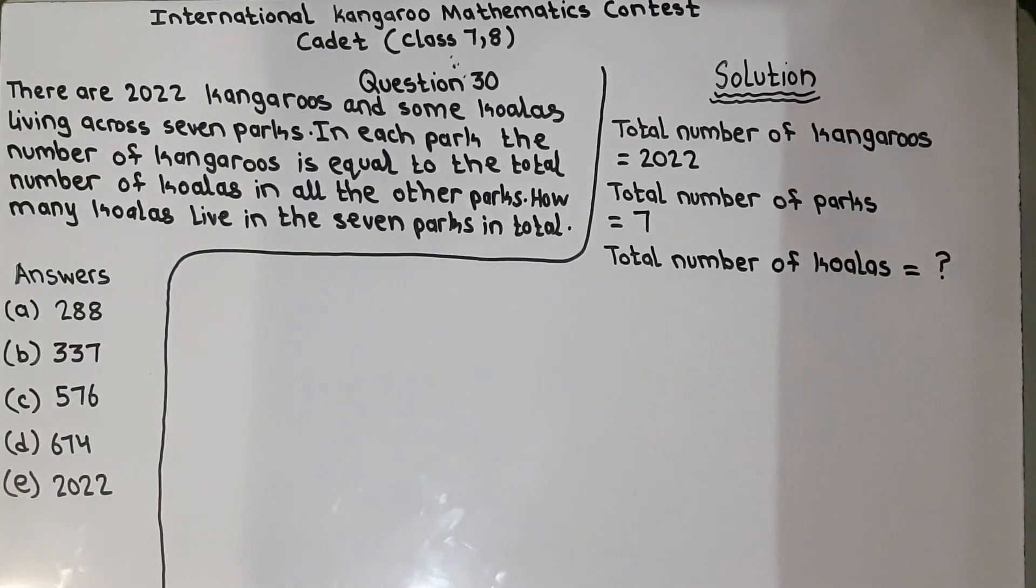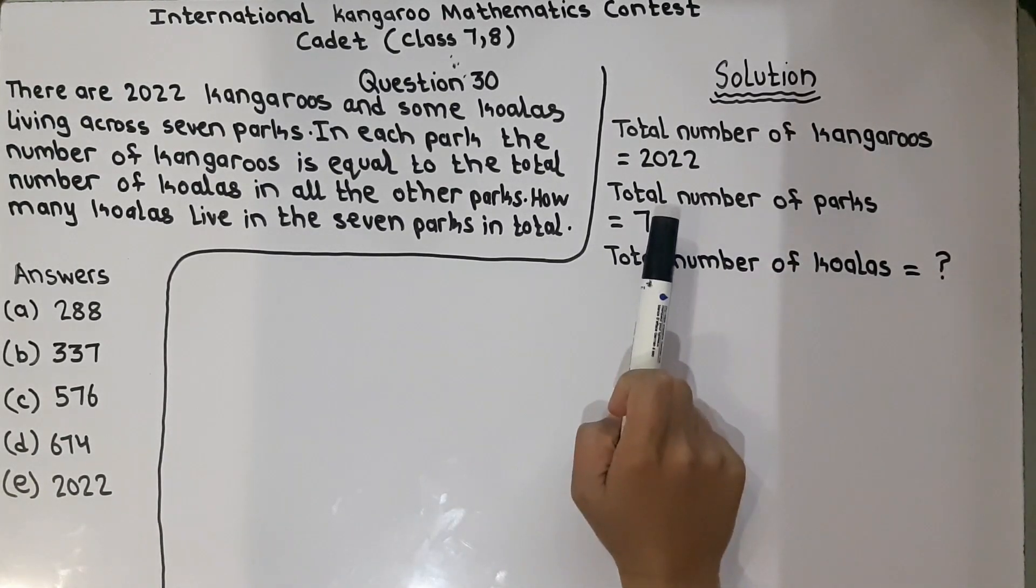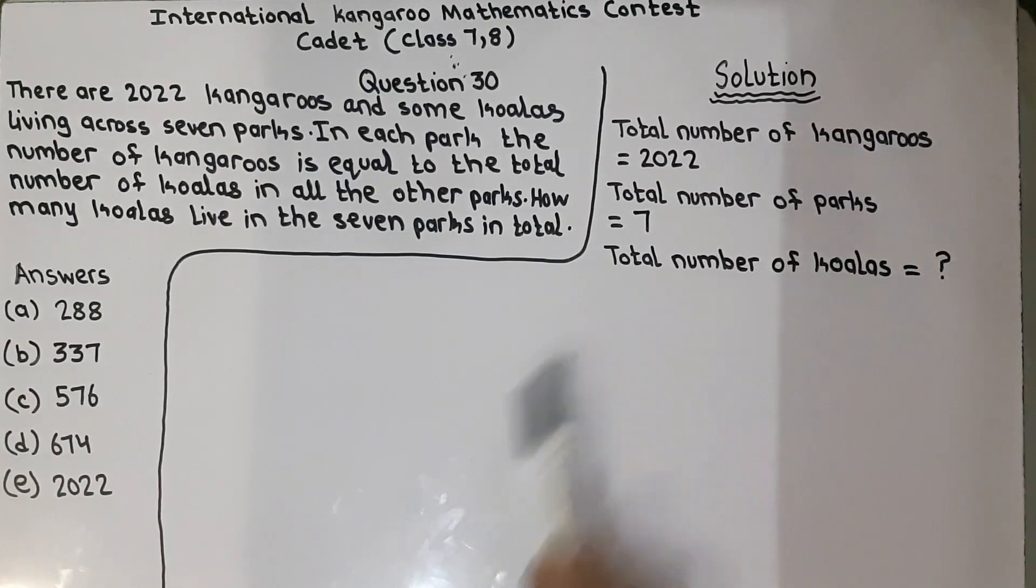He is saying how many koalas live in the 7 parks in total. So first, we have to find the number of kangaroos. Here they have told that total number of kangaroos is 2022, total number of parks is 7, and total number of koalas we have to find.